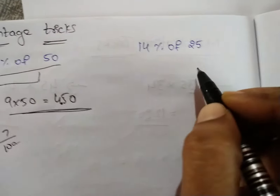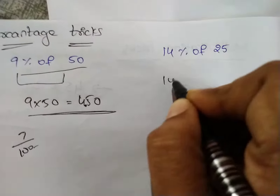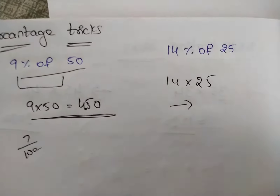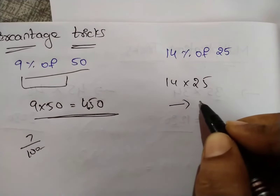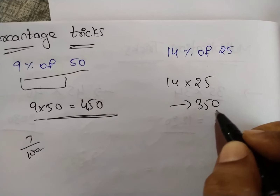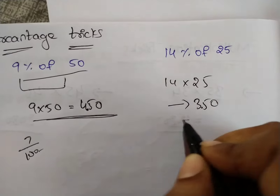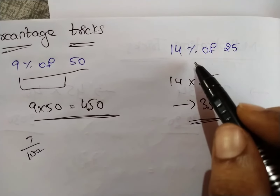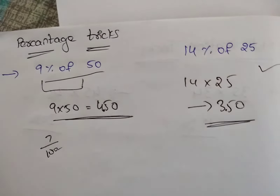Next, I will write 14% of 25. 14% of 25 is 14 into 25. Direct multiplication is 350. So, 2 digits after the decimal point gives us 3.50. Our answer is 3.50. 14% of 25 is 3.50.